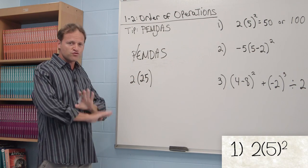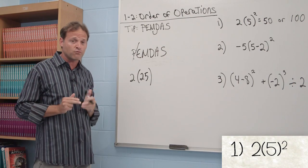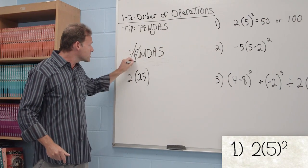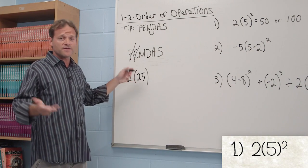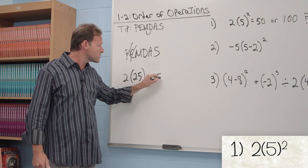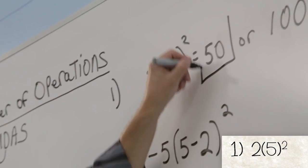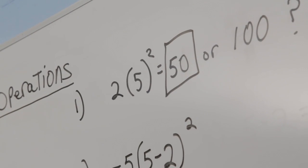As you're going through these problems, just rewrite everything else. Don't skip steps here. If you do, you're probably going to get the wrong answer. Exponents are done. There's only multiplication left. There's nothing more to do than to multiply 2 times 25, which is 50. 50 is therefore the correct answer and not 100.